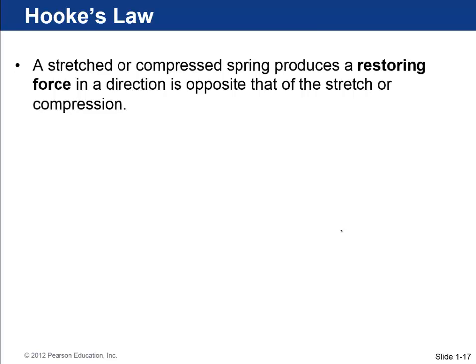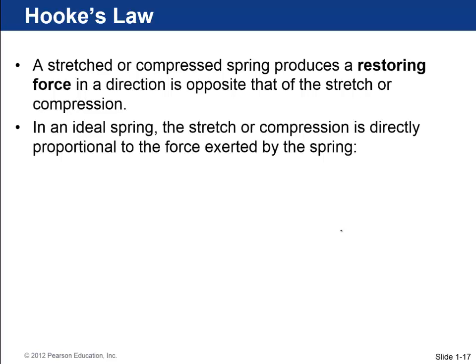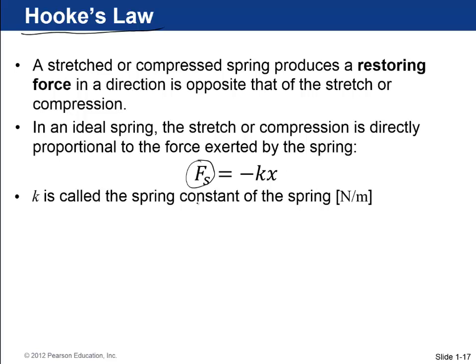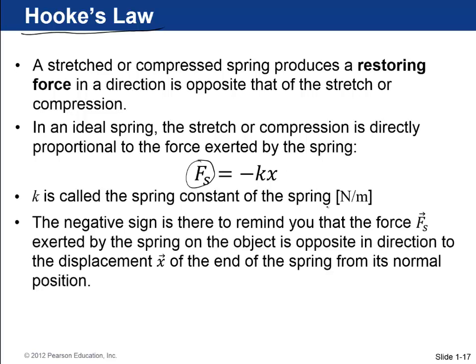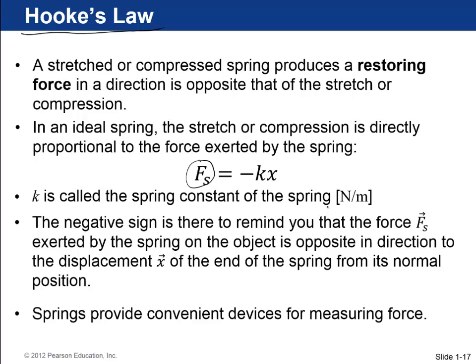A stretched or compressed spring produces a restoring force in a direction that's opposite to that of the stretch or the compression. And if it's an ideal spring, then you have what's called Hooke's Law, which is F_s equals negative k times x. F_s is the force of the spring. x is the displacement of the end of the spring. k is called the spring constant in newtons per meter. And the negative sign is there to remind you that the force exerted by the spring on the object is opposite in direction to the displacement at the end of the spring. So if you push the spring to the left, then the spring pushes back to the right. And springs provide a convenient device for measuring force. And that's what's discussed at the end of chapter four.